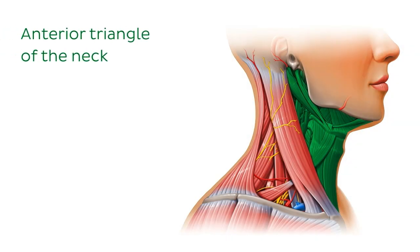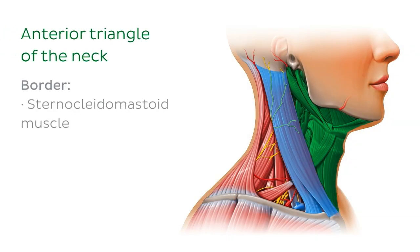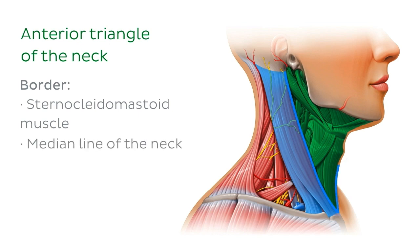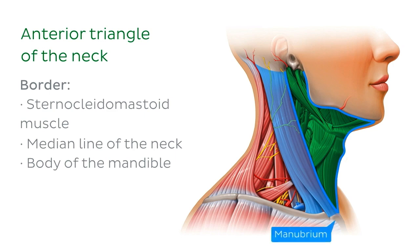The anterior triangle is bordered laterally by the sternocleidomastoid muscle, whose muscle belly can be seen just here. It is bordered medially by the median line of the neck, which we saw earlier, and superiorly by the body of the mandible, which makes up the lower jaw. You can imagine that the apex of the anterior triangle is pointing towards the manubrium of the sternum.